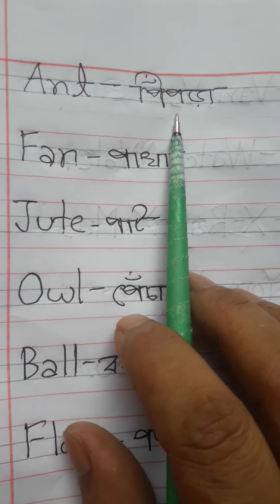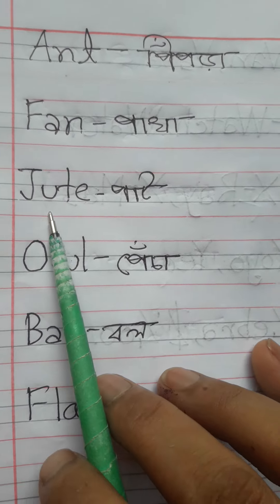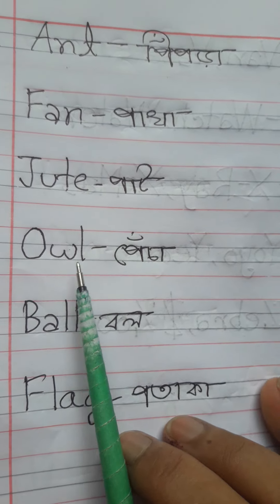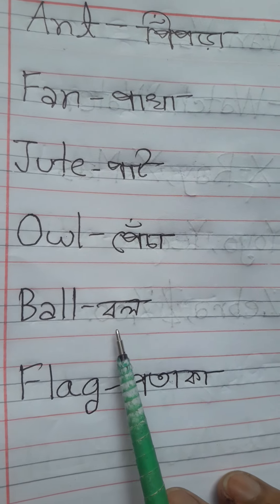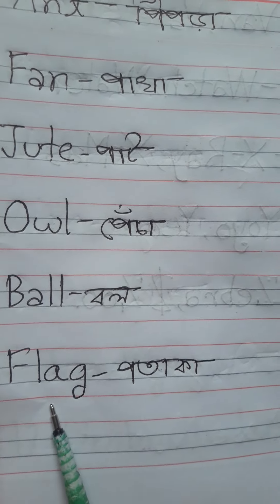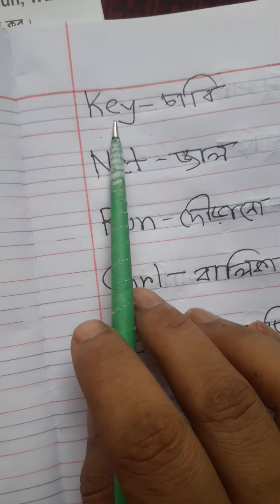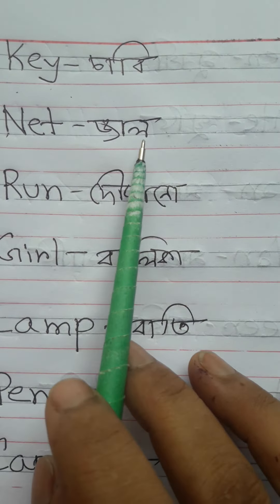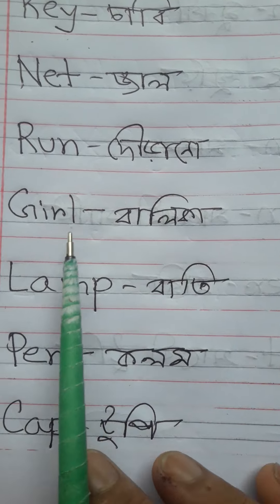আবার পড়ি। Ant অর্থ পিঁপড়া। Fan অর্থ পাখা। Jute অর্থ পাট। Owl অর্থ পেঁচা। Ball অর্থ বল। Flag অর্থ পতাকা। Key অর্থ চাবি। Net অর্থ জাল। Run অর্থ দৌড়ান।